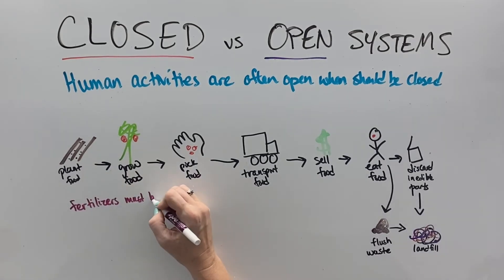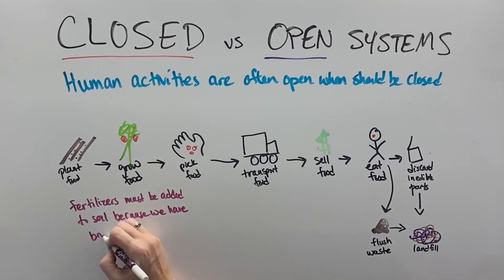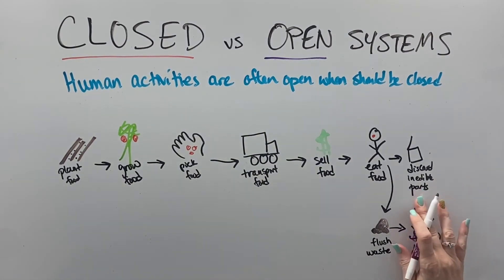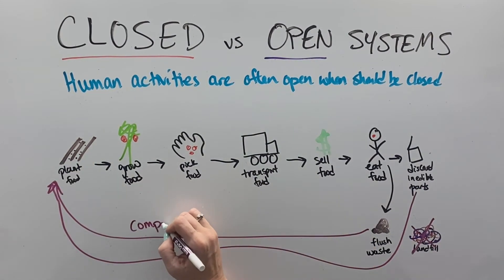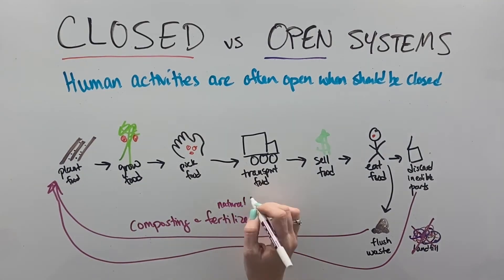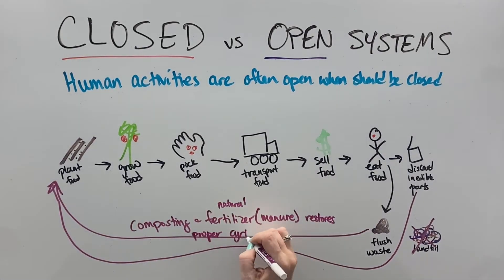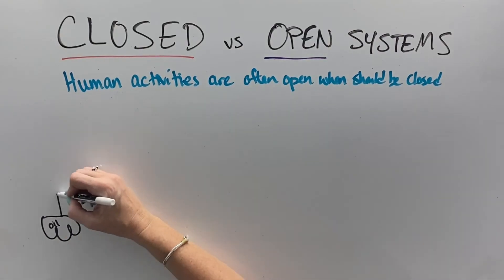So when we learn about agriculture, one of the things that we figure out is we start having to use these chemical fertilizers because we've broken the matter cycle. All of that matter, that waste needs to go back into the soil through composting and natural fertilizers or manures to restore the cycling of that matter.